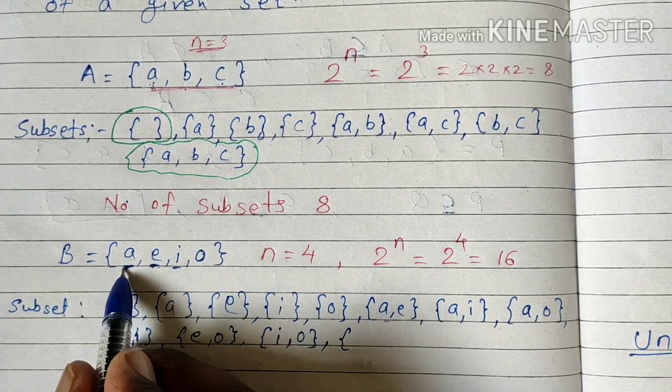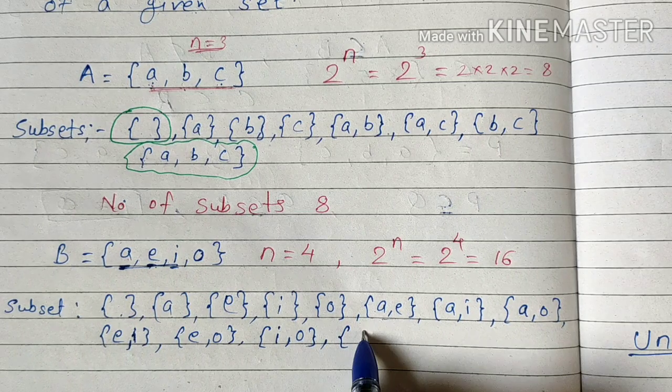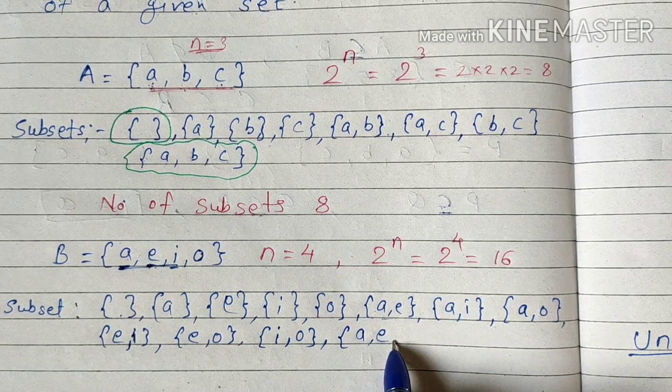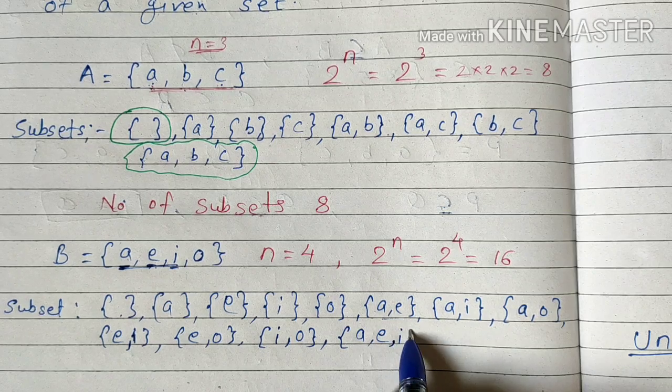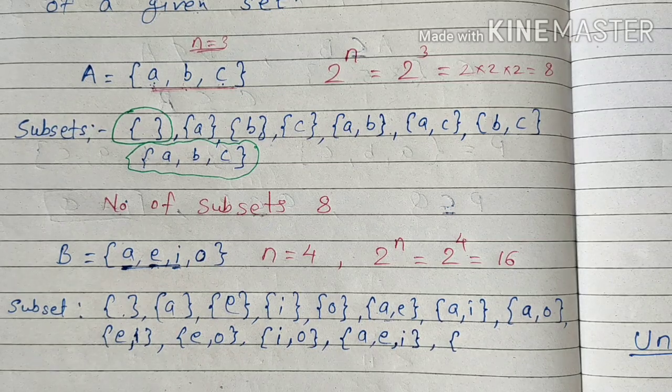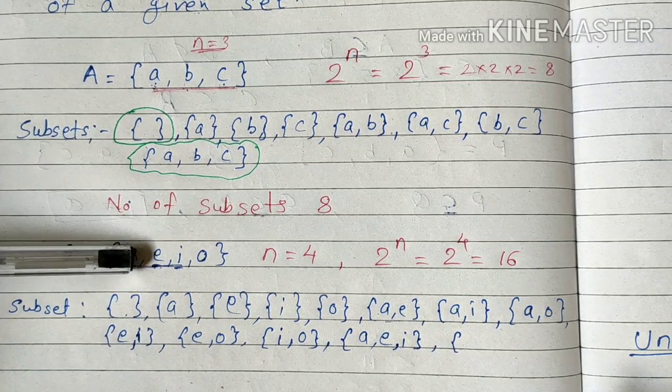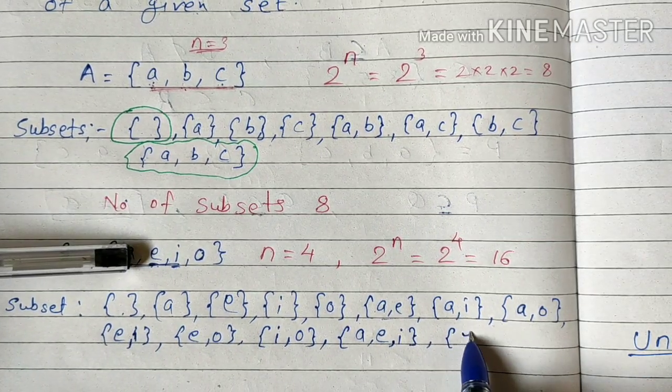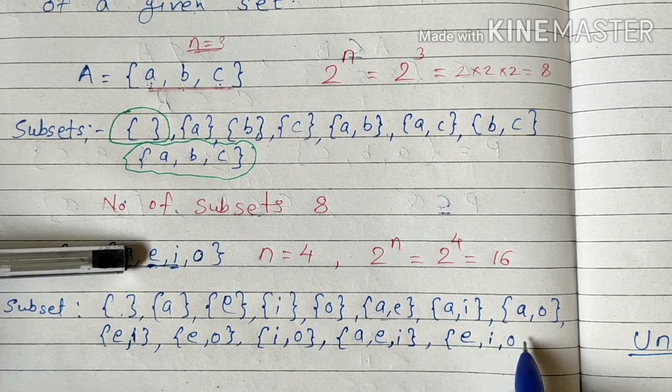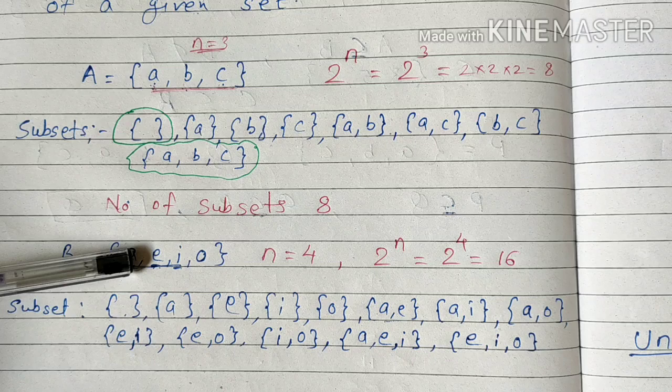First three: {a, e, i}. Then next three, block this a. What is it? {e, i, o}.